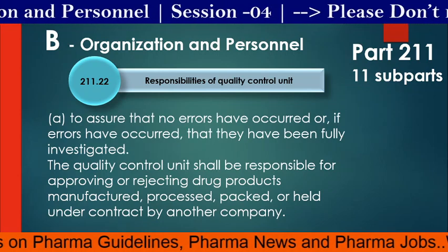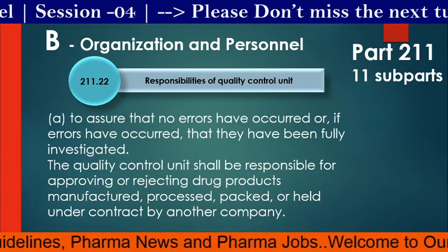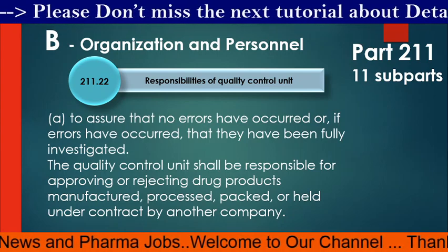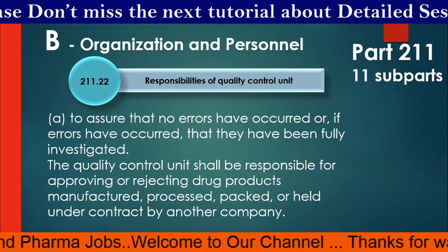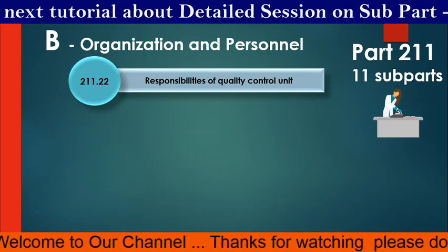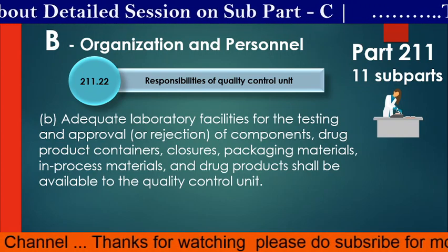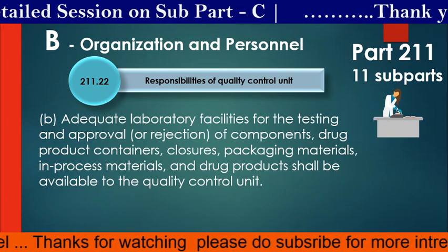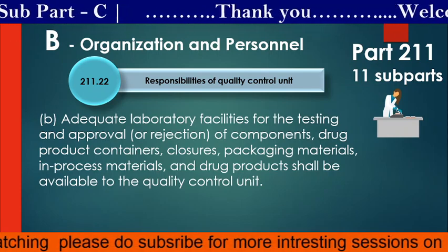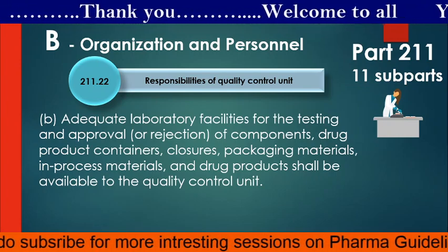The QC Unit reviews records to assure that no errors have occurred, or if errors have occurred, that they have been fully investigated. The Quality Control Unit shall be responsible for approving or rejecting drug products manufactured, processed, packaged or held under contract by another company. The QC Unit shall have adequate laboratory facilities for the testing and approval or rejection of components, drug product containers, closures, packaging materials, in-process materials and drug products.